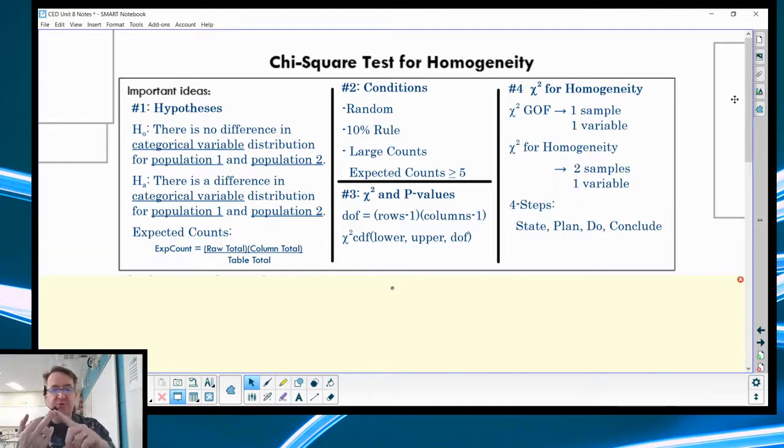So again, lots of information there, but all of it is very similar to everything we've done with testing to begin with, and also very similar to what we do with chi-squared tests before. The differences here primarily: slight difference in terms of how we spell out our hypotheses, how we find our expected counts, and then just degrees of freedom.